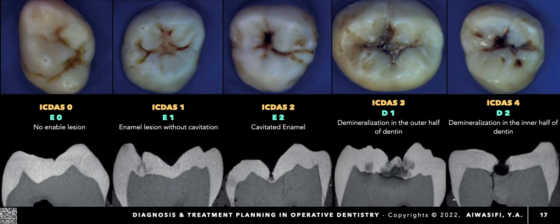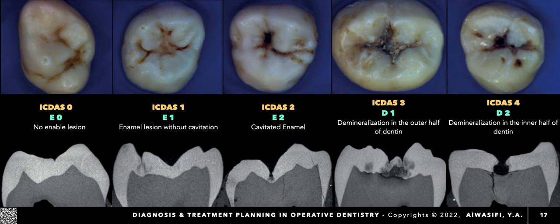This diagram shows the relationship between radiographic notation and ICDAS scores. ICDAS 0 corresponds to no enamel lesion — E0. E1, just enamel lesion without cavitation, is ICDAS 1. E2, cavitated enamel lesion obvious at the pit or fissure, is ICDAS 2. ICDAS 3 corresponds to D1, demineralization in the outer half of dentine. ICDAS 4, coded as D2, is demineralization of the inner half of dentine.